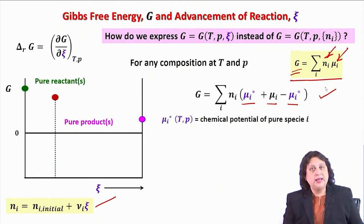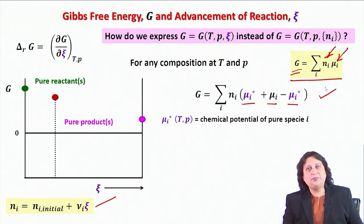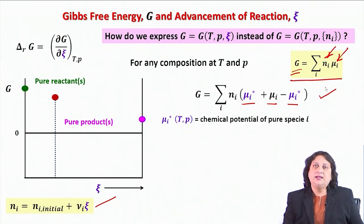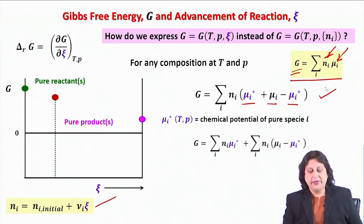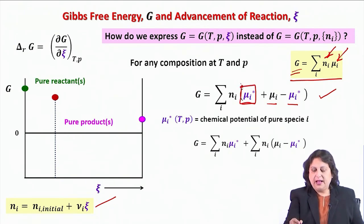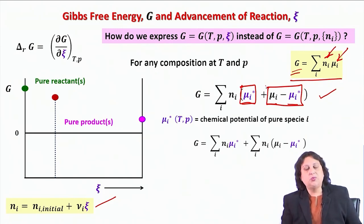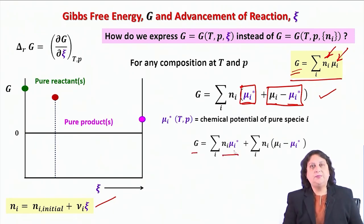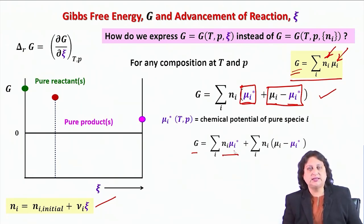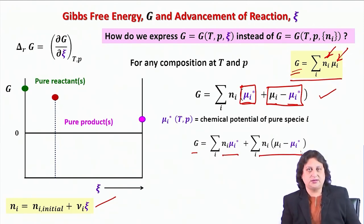What is μi*? Let me remind you that μi* at a given temperature and pressure is the chemical potential of the i-th component at that temperature and pressure, had it been present in the pure phase. Therefore, I can always write down this equation by taking out the two portions separately. What would be my resultant expression?